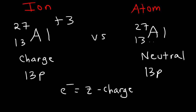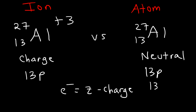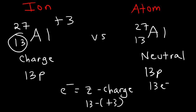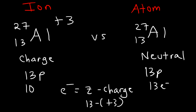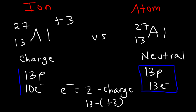In the case of the atom, 13 minus the charge of 0 is 13. For the ion, it's going to be 13 minus the charge of positive 3, so 13 minus 3 is 10. The aluminum ion has 10 electrons. The reason an atom is electrically neutral is because the number of protons and electrons are the same, but in the ion the number of protons and electrons are different, and that's why there's a net charge.